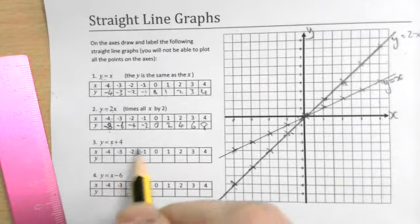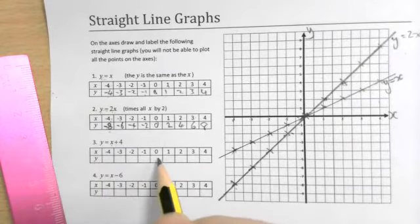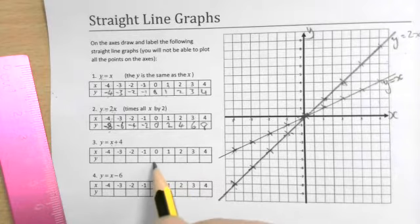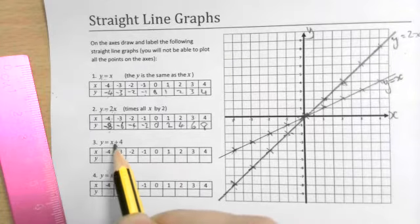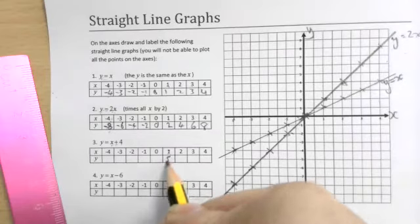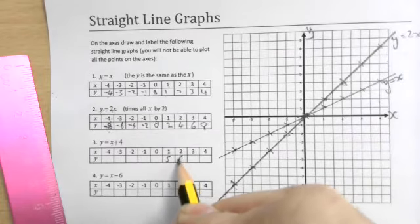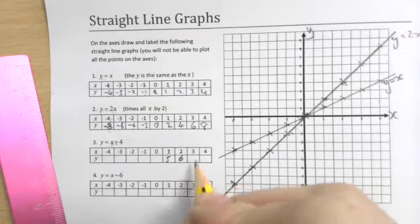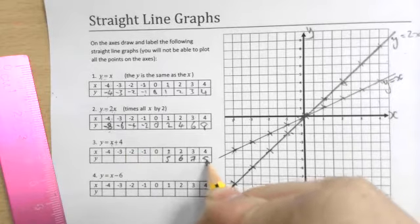So y is equal to x plus four. And these are actually, sometimes people find those a little bit difficult. So if you want to, you can start with the positive numbers and then see what's going on. So maybe start here. One, one plus four, the x number plus four. So one plus four is five. Two plus four for the next one. Three plus four for the next one.